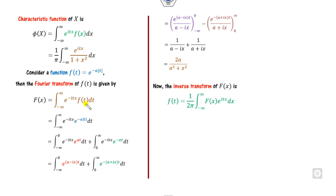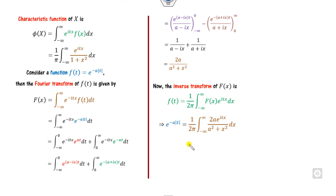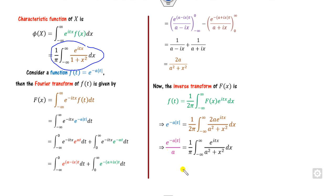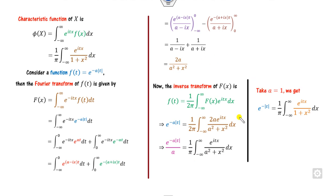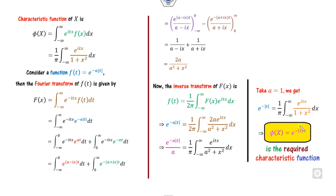We have now taken the Fourier transform. To find the original function, we apply the inverse Fourier transform of f(x). Substituting the Fourier transform value and taking 1/(2pi) outside, we compare the two expressions. The factor of 2 cancels out. Comparing: 1/pi is present, e raised to iota tx is present, and a is an extra factor on the left side. If we set a equal to 1, this portion is nothing but the characteristic function of the Cauchy distribution. This is the simplest way to solve for the characteristic function without needing complex analysis or the residue theorem.